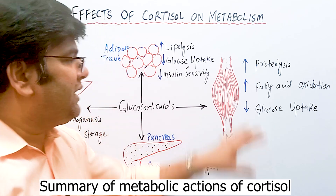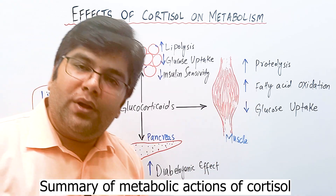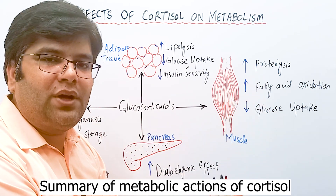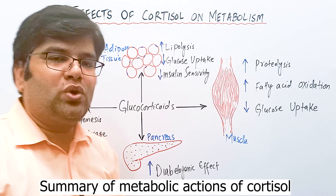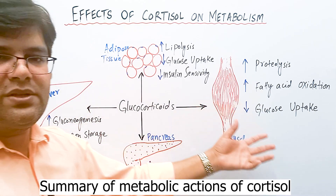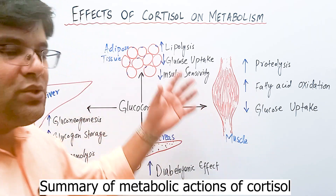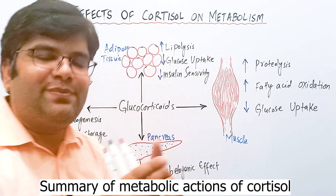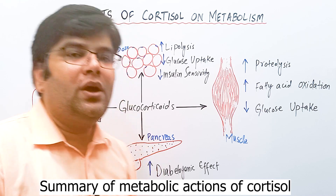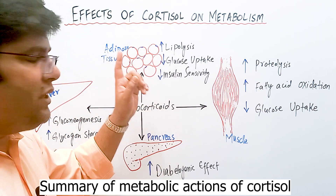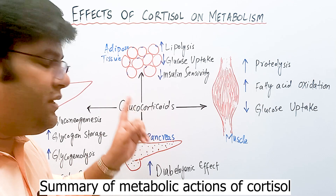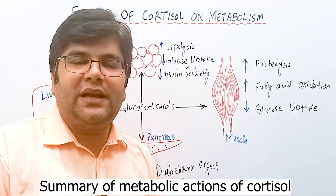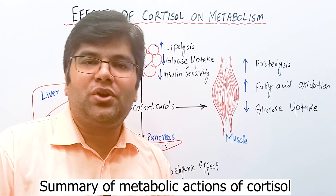The energy source in muscles shifts from glucose to lipids — lipolysis is increased in muscles and triglycerides are broken down, forming fatty acids that provide energy. Lipolysis is also increased in adipose tissue with redistribution of fat toward the center in chronically elevated cortisol. This also causes insulin resistance, and high cortisol levels as in Cushing syndrome can cause adrenal diabetes or steroid diabetes.